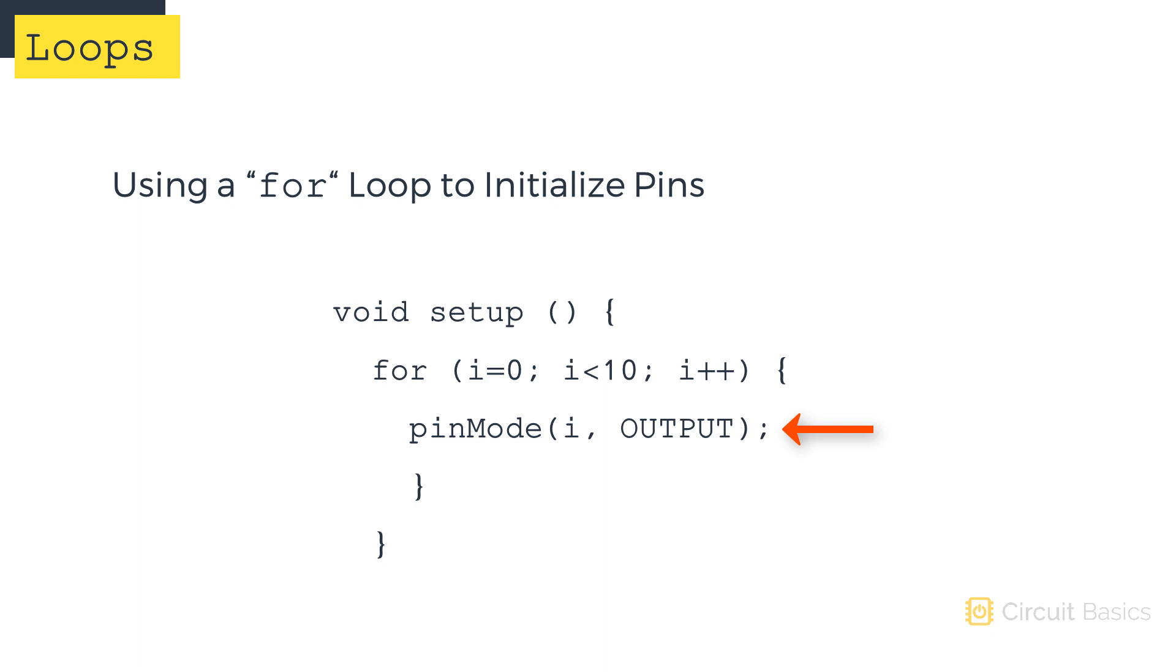The for loop will continue, increasing i by one each time through the loop until i is not less than 10. When i equals 10, the condition will be false, so the loop will exit and continue on with the rest of the sketch.